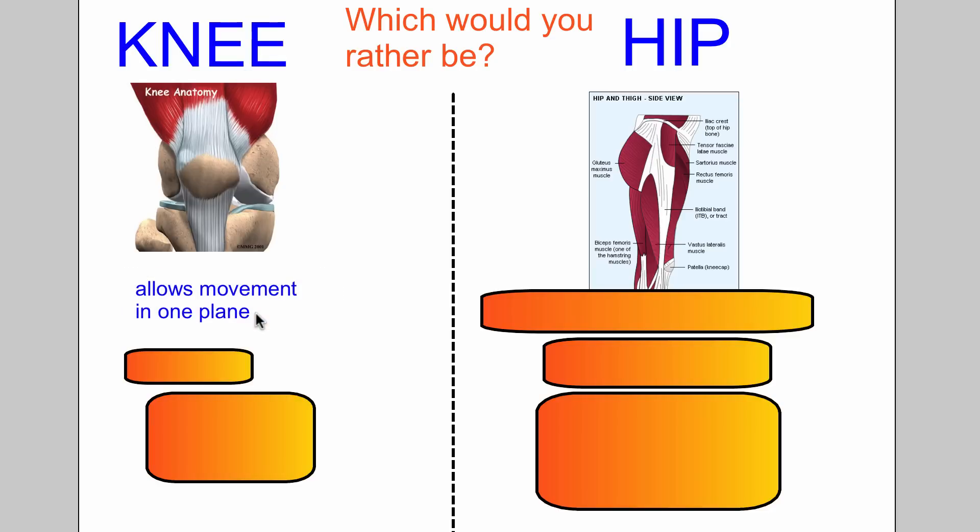One movement. So if you want to add some pain to that, then you would try to push somebody's knee out of that one plane. We call it a hinge joint. The elbow is similar, same kind of way, and it allows for bending or straightening, otherwise called flexion and extension.